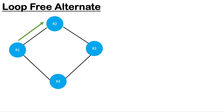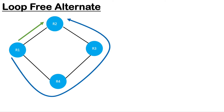Here we have a primary path which is the directly connected path between R1 and R2. Since it's a single link it would always be preferred, and there is also an alternate path which is a longer path. If there is a problem with the primary path, R1 needs to put that backup path — indicated by the blue line — into the routing table. LFA provides a quicker and faster method to bring this backup path into the routing table and program it in the data plane.